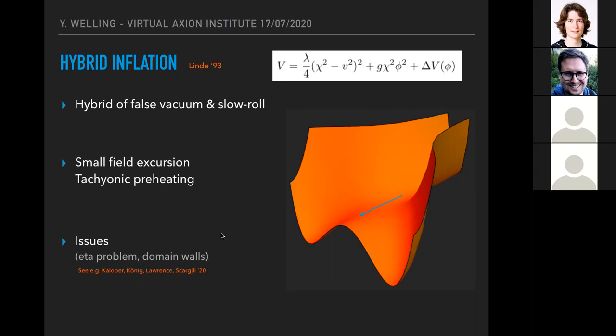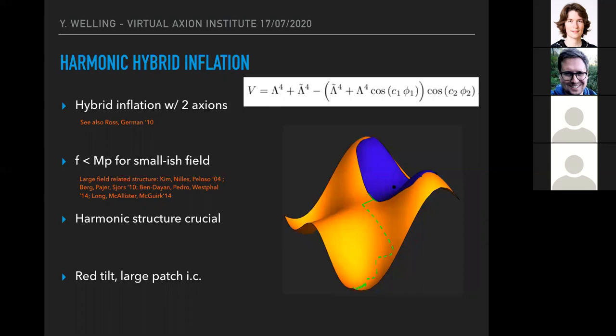So therefore we are motivated to consider a model of hybrid inflation that's driven by two axions, where we have knowledge of all the higher dimensional operators. And we can propose a model of the potential of this form where you can see now that if the phi two field is such that the cosine is negative, then the field phi one will be stabilized at the point where this cosine is equal to minus one. So this phi one field plays the same role as the chi field in the previous slide. And the phi two field will play the role of the inflaton. And as long as this cosine remains negative, this field remains stabilized, but at some point it crosses a critical value where the phi one field becomes tachyonic, just as in hybrid inflation, and then inflation will end.